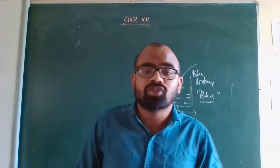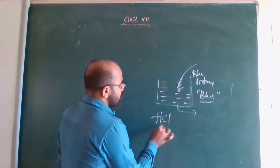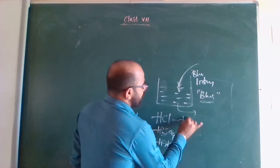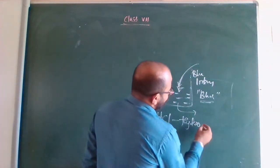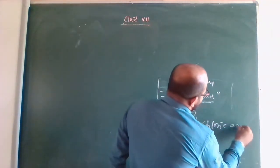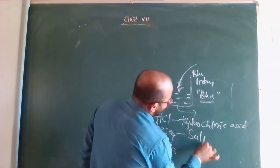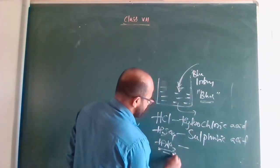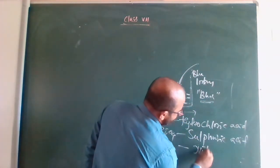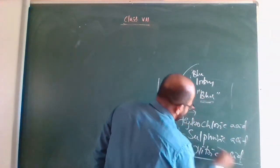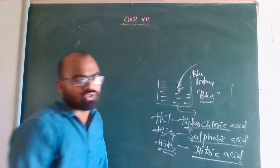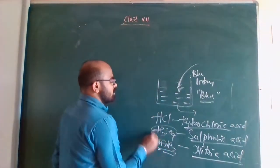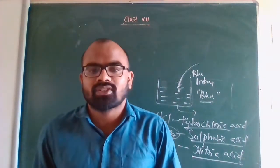There are 3 strong acids: HCl (hydrochloric acid), H2SO4 (sulfuric acid), and HNO3 (nitric acid). These are the 3 strong acids. H2SO4 is called the king of acids or king of chemicals.